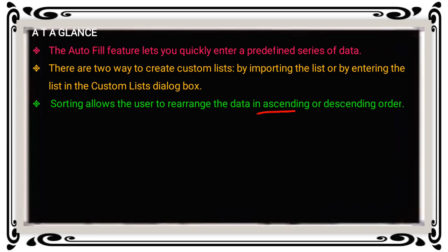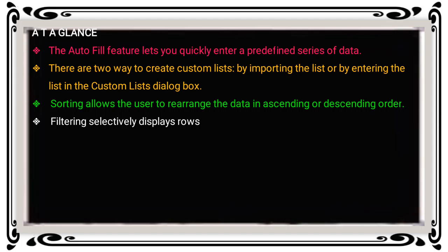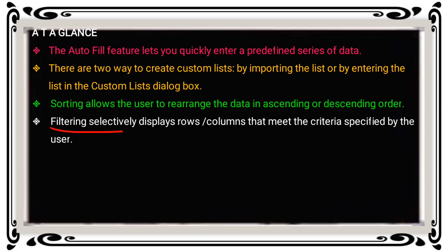Sorting allows the user to rearrange the data in ascending or descending order. Ascending order means lowest value to highest — alphabets A to Z. Descending order means largest number to smallest number, and alphabets Z to A. Filtering selectively displays rows and columns that meet the criteria specified by the user.